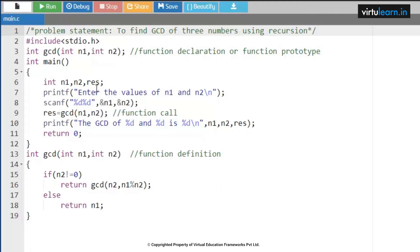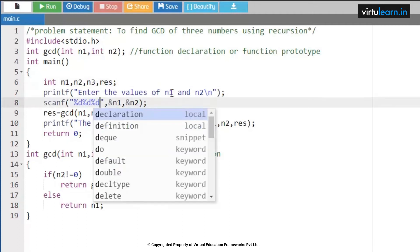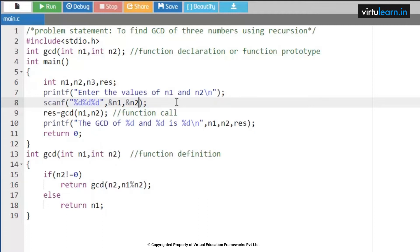Please observe closely. Here I am taking three numbers n1, n2, n3, and result. Here I need to read three variables, so three percent d's, and here address of n3.